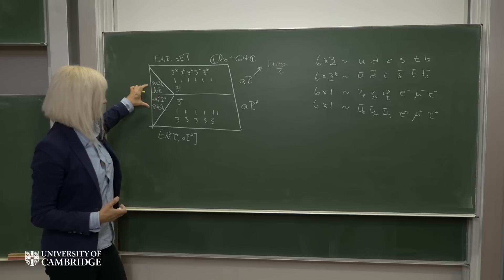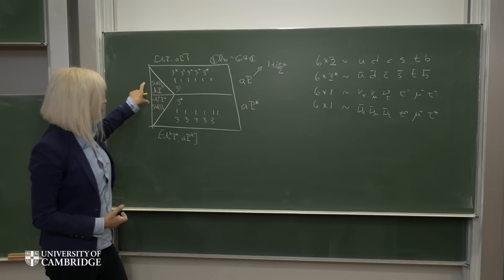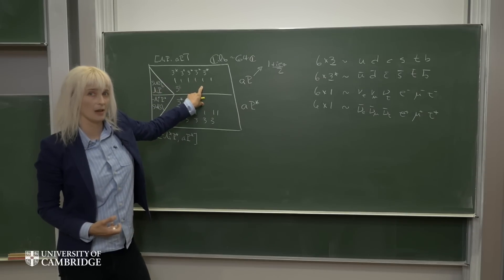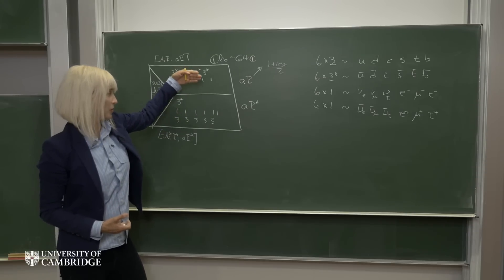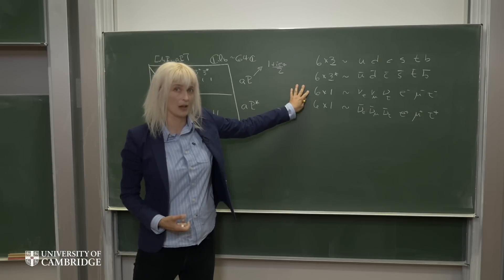Within that algebra, we were able to identify SU3 generators. And we used those SU3 generators to act on the rest of the space. We then found that the rest of the space broke down into exactly the SU3 representations we would expect for 3-fold generations of quarks and leptons.